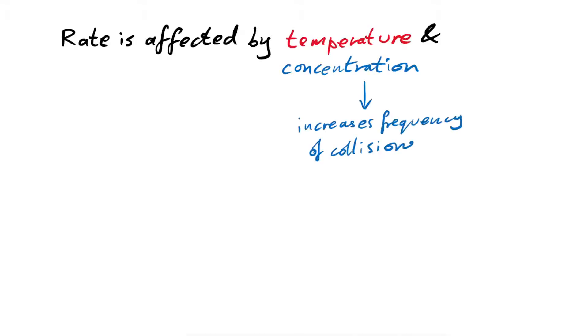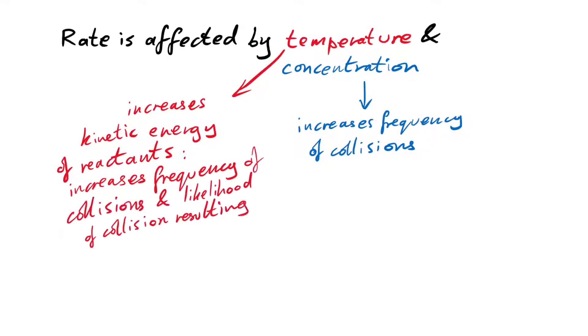You should remember from GCSE that rate is affected by temperature and concentration. Concentration, if we increase that, it increases the frequency of collisions because there's more of them in a certain space. If we increase the temperature, that's increasing the kinetic energy of the reactant particles. That's increasing the frequency of collisions because they're moving faster, but it's also increasing the likelihood of a collision resulting in a reaction.